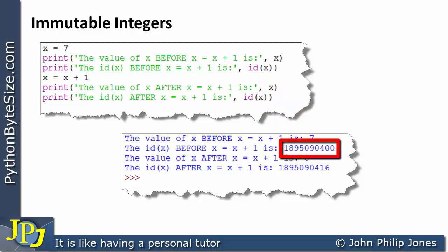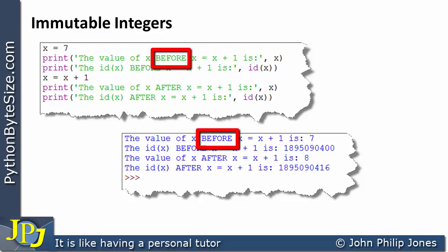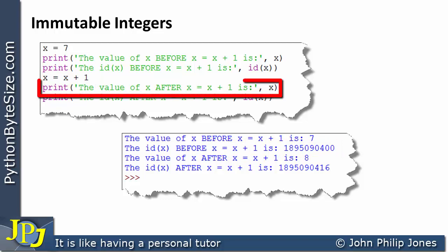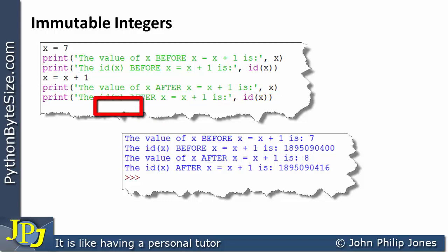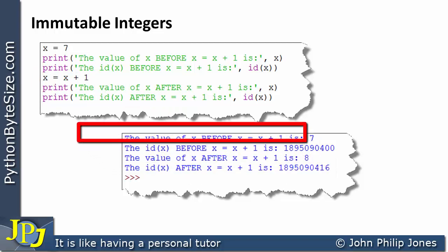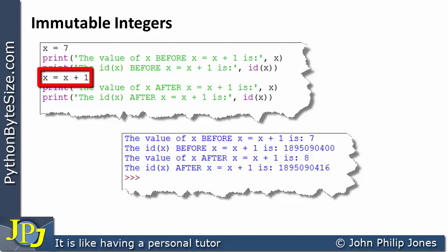The id of x in CPython is the address of where the object representing x is stored in the computer's memory. So this string tells us the value of x before the addition is executed — it is seven, as expected, because x was assigned seven. This line tells us the id before the addition executes. Then the next program statement gives us the value of x after the addition: it is eight, because one was added to x. And the following line tells us the id after the addition has executed.